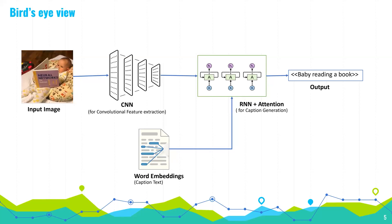Basically, we take the input images, pass them through the CNN to extract features, and then we try to predict using the attention mechanism and the decoder side to get the output caption.